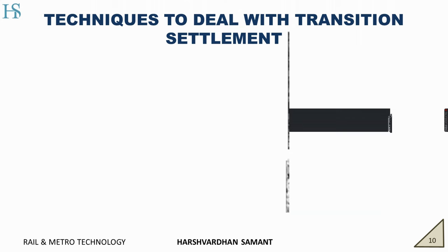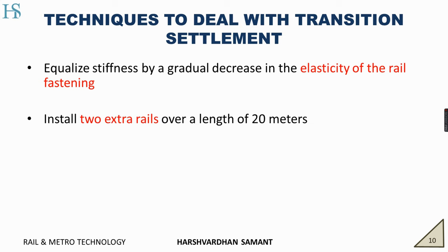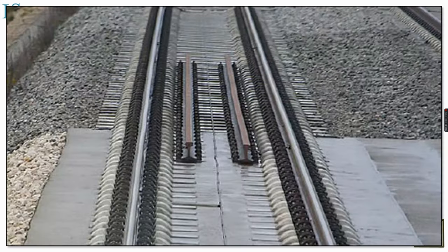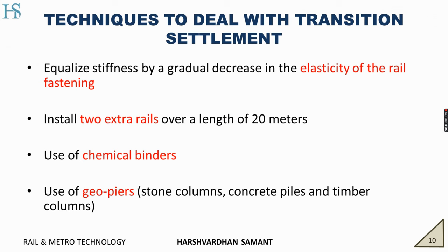Techniques to deal with transition settlements: First, equalize stiffness by gradually decreasing the elasticity of the rail fastening. Then install two extra rails over a length of 20 meters — in the figure you can see almost one-fourth is on slab track and three-fourth rail is on the ballasted track. These two extra rails are provided to negotiate the transition point. We can also use chemical binders or geo-peers such as stone columns, concrete piles, or timber columns.